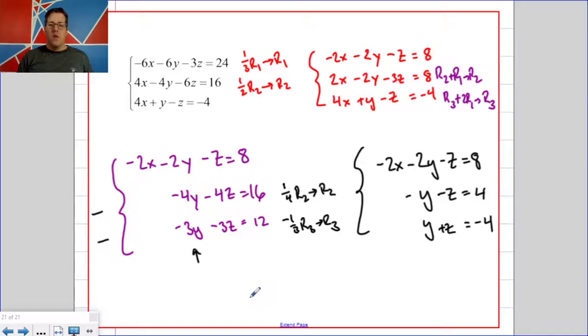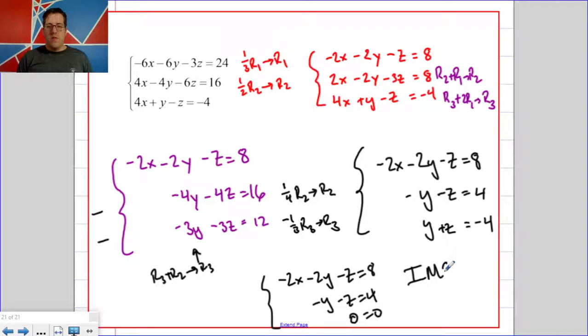That's a z. When I combine these two rows together, so when I do row three plus row two, I get this and it's this zero equals zero that lets me know that I have infinitely many solutions.